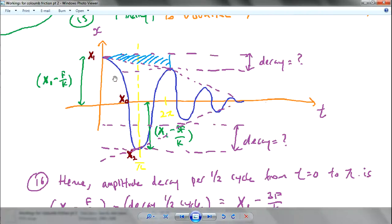we were talking about the Coulomb friction and we were talking about the damping decay, right? Why is it two cycles, okay?